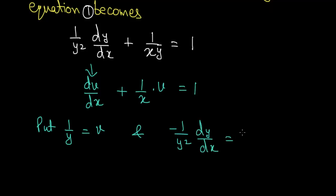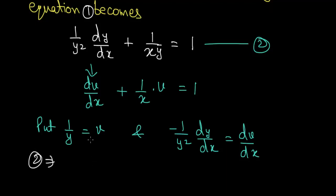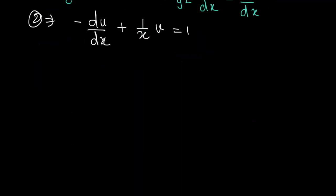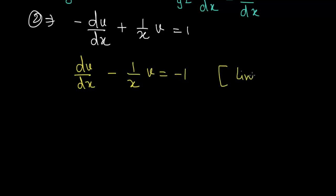Using the values of v and dv/dx, the equation transforms to −dv/dx + (1/x)v = 1, or equivalently dv/dx − (1/x)v = −1. This is now a linear differential equation in v.